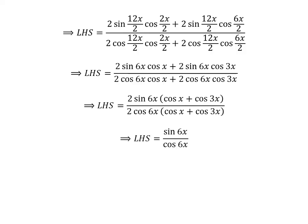Cancelling out the common factor 2 times (cosine of x plus cosine of 3x) gives us: the left-hand side of the equation is equal to sine of 6x upon cosine of 6x.